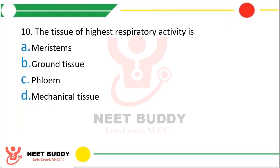Question 10: The tissue of highest respiratory activity is — meristems, ground tissue, phloem, or mechanical tissue? The correct answer is option A — meristems have the highest respiratory activity.